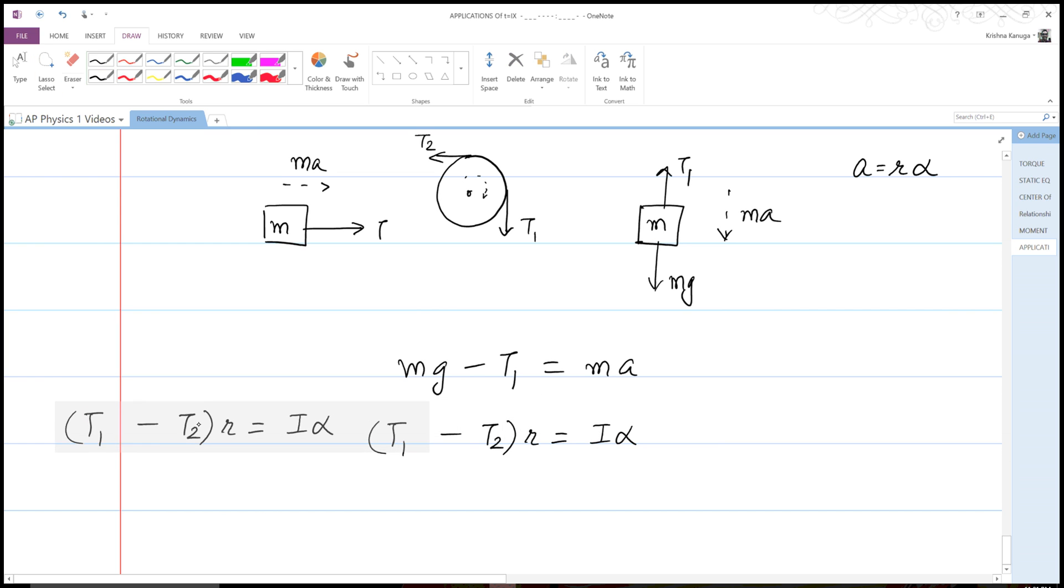But what I'm going to do is move this to the side and I'm going to rewrite this instead as T1 minus T2 is equal to I a over r squared. And we'll replace I as one half m r squared for the disc times a over r squared, which makes it equal to simply ma divided by 2.